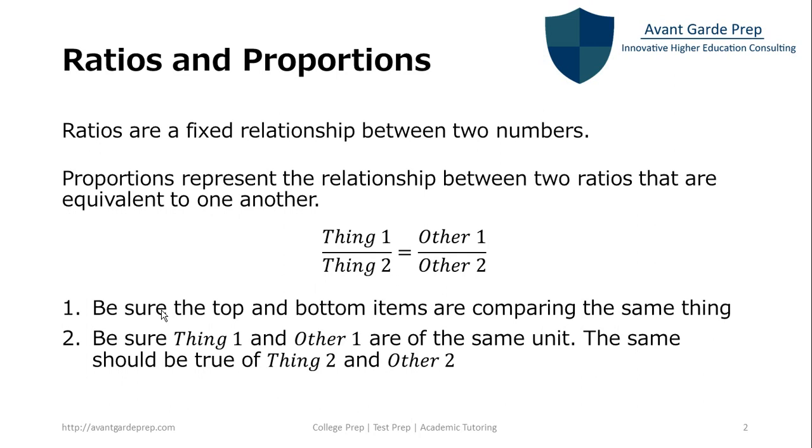When you're making these proportions, you want to make sure that the top and bottom items are comparing the same thing. In our example, the four cars on one tire, those are the same. Then you want to make sure that when you're setting up this proportion, that thing one and other one are the same units,